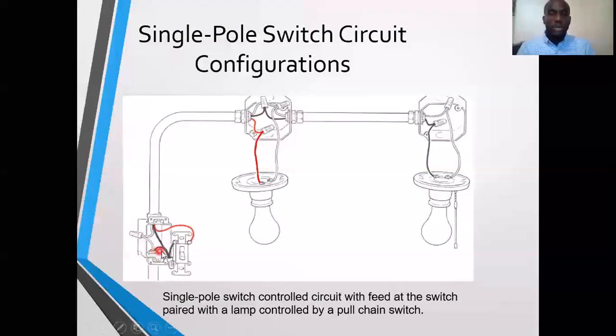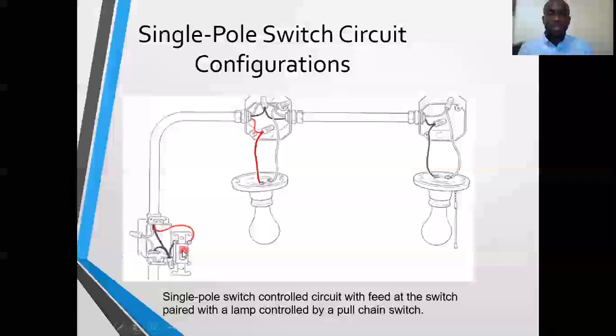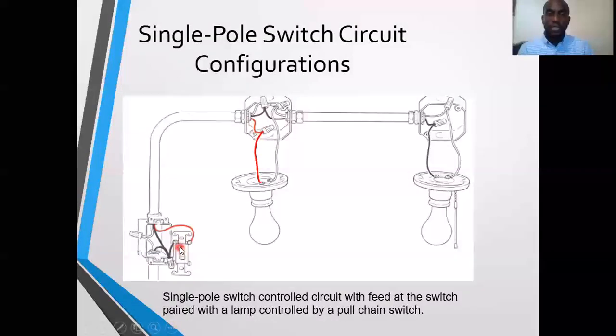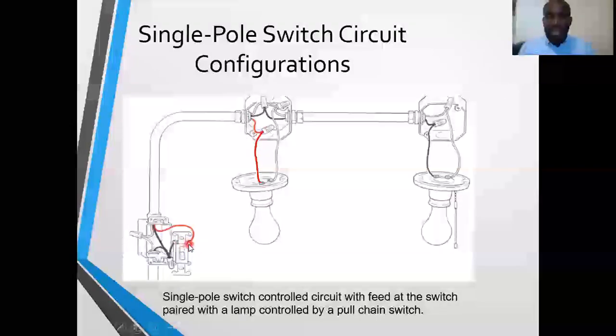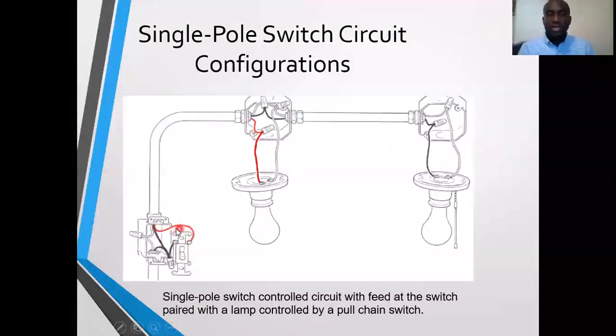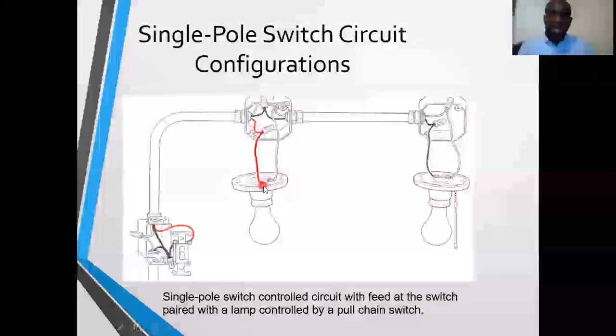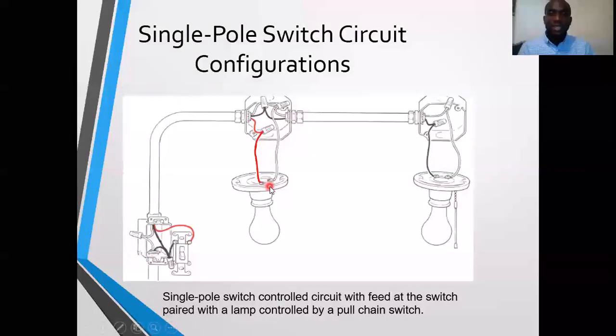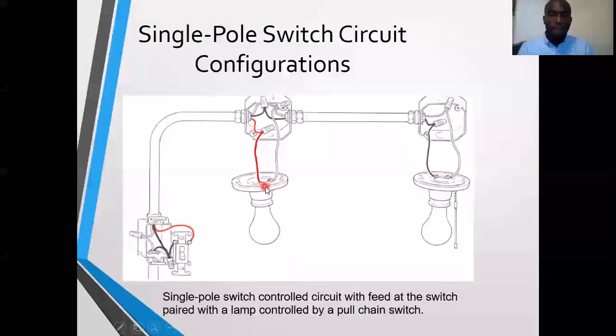So the feed is at the switch. We splice or share the main source hot, send one to this first switch which is the single-pole switch inside the switch box, and then we take from that switch the switch feed, send it all the way to the first keyless. This keyless, we will connect it to the brass or bronze terminal.